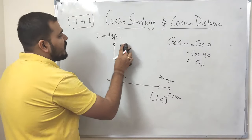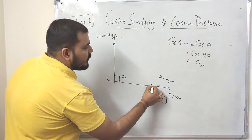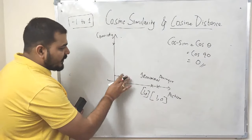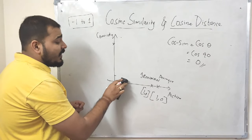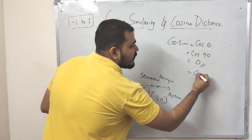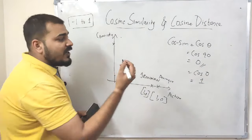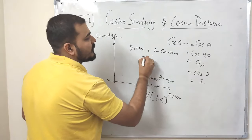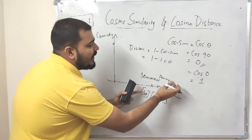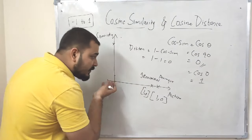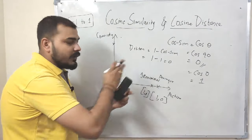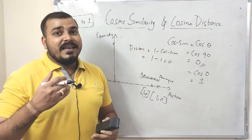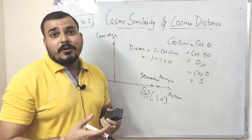Now consider replacing Minions with Iron Man. Iron Man is also an action movie, so its vector is also [1, 0]. The angle between Avengers and Iron Man is 0 degrees, so cosine similarity = cos(0°) = 1, and cosine distance = 1 − 1 = 0. This means Iron Man and Avengers are essentially in the same unit vector — they are very similar.